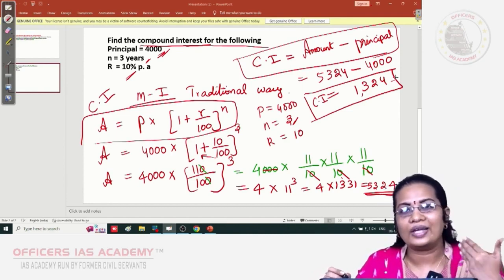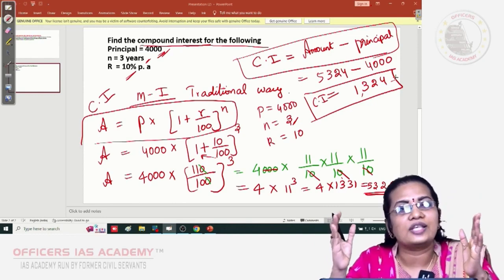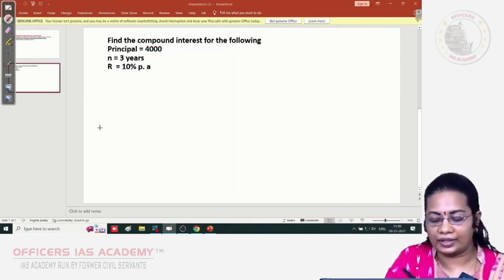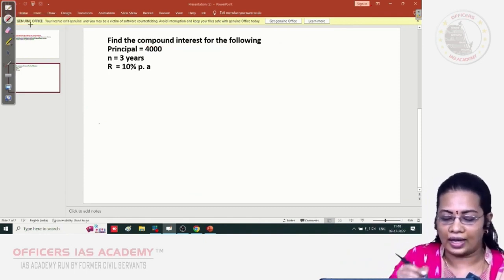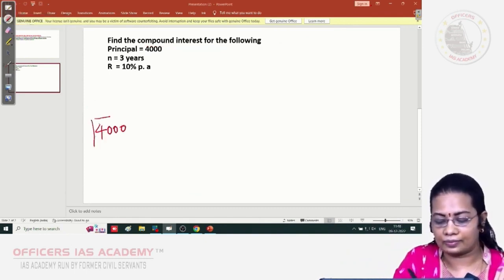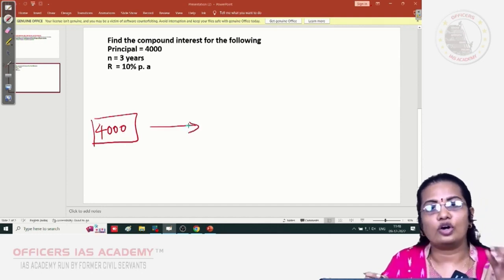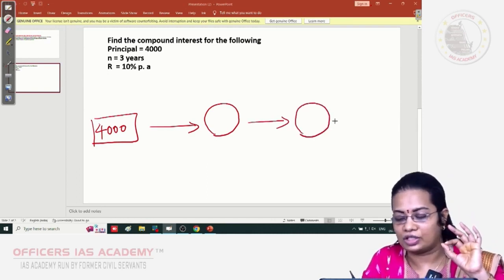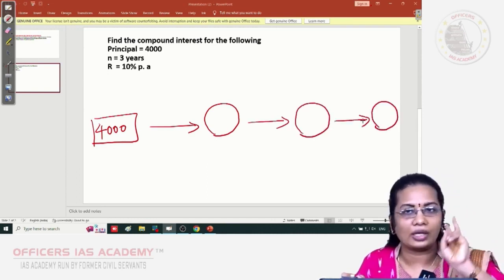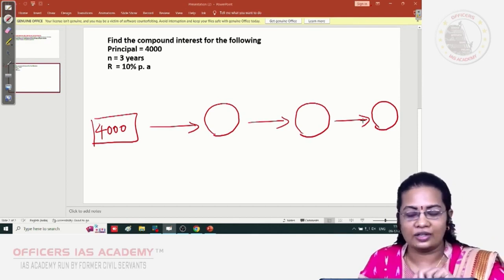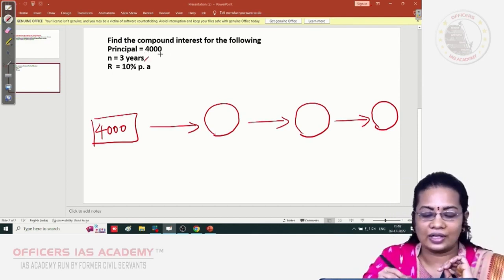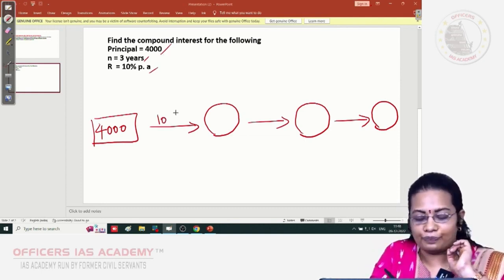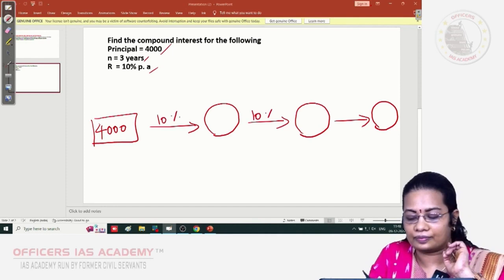Under the shortcut method, you can take the amount 4,000 as it is. For how many years? Three years. So I have taken three circles. N is 3 years. For one year, what is the interest? 10%. So 10% you take everywhere.